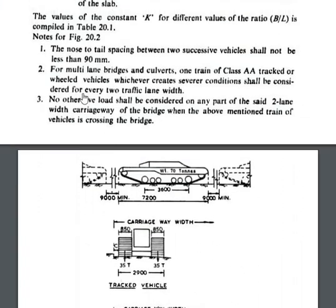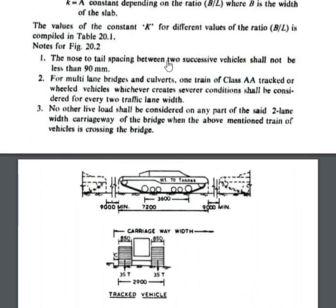The tail-to-nose spacing between two successive vehicles shall not be less than 90 meters. This refers to a tracked vehicle — like military war tanks. So for such vehicles, the distance from vehicle nose to tail should not be less than 9000 mm, that is 9 meters. This applies to multi-lane bridges and culverts.